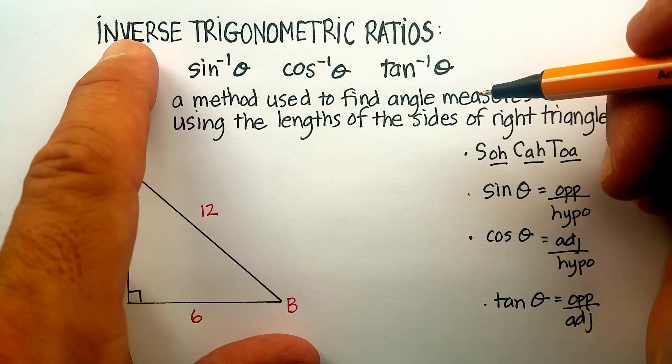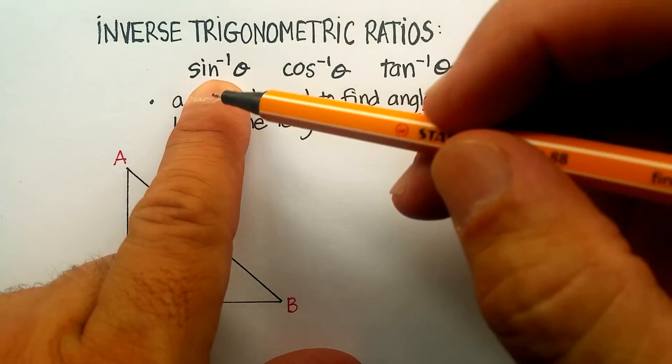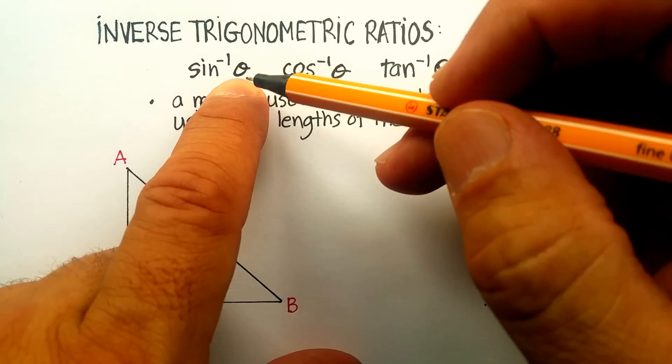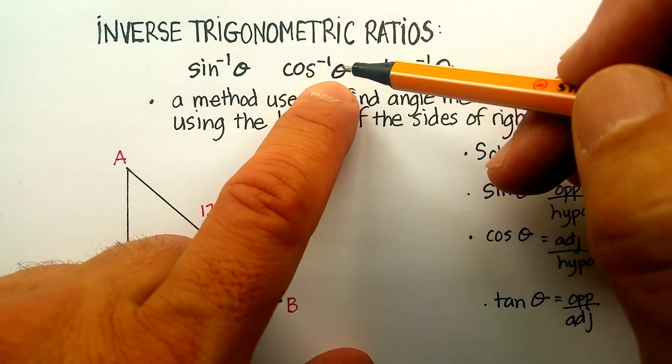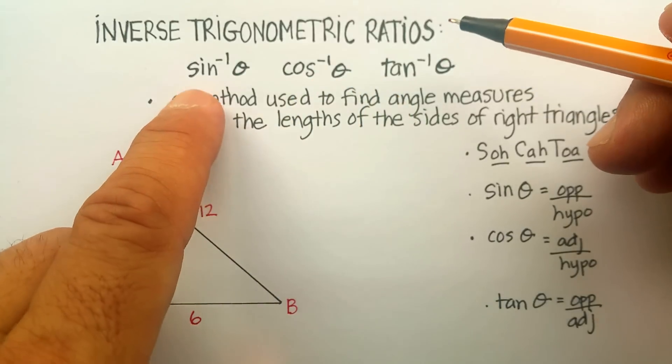We're going to look at something called inverse trigonometric ratios, and you would write them this way: sine to the negative one theta, and that means any angle. Cosine negative one, any angle. Tangent negative one, any angle.